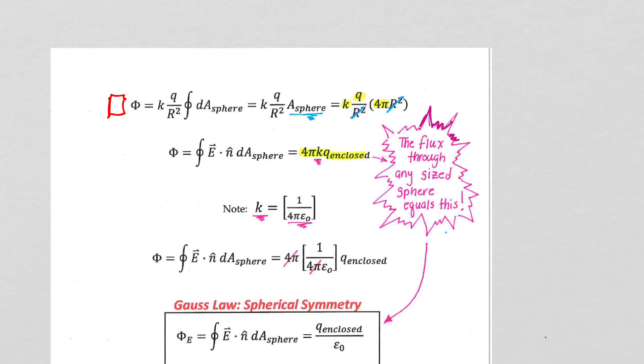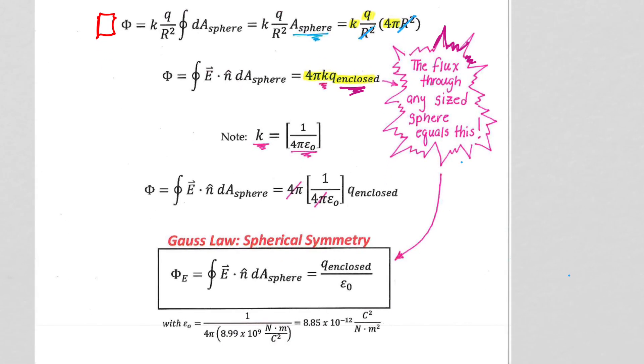We get 4 pi k. We're going to add the q enclosed here because it was only the q enclosed in this surface that we considered. We didn't even talk about the possibility of q's being outside the surface, but we'll talk about that more on our next page of notes. But for right now, for completeness, get the q enclosed in there.